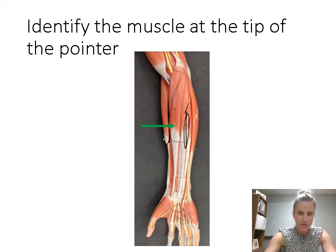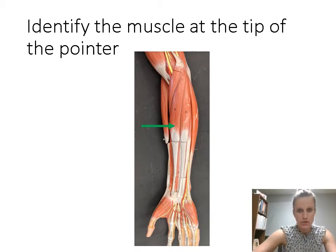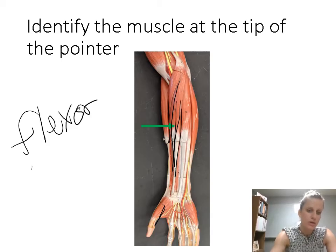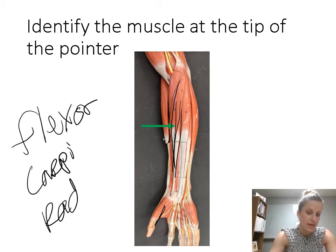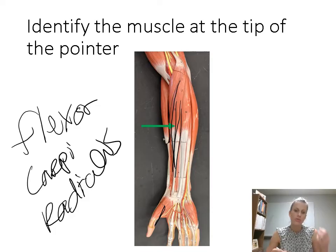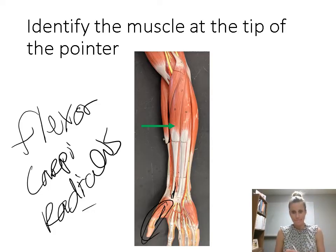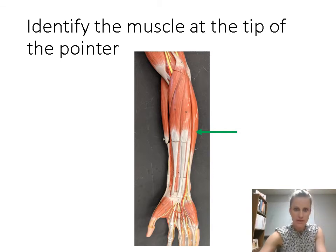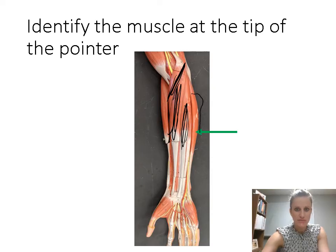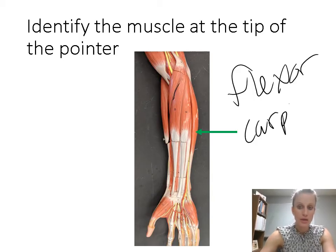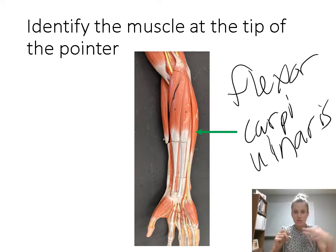The middle one was palmaris longus. Now naming the one on the side of the thumb — this is the flexor carpi radialis. It's a flexor because it's on the flexor side; carpi because it comes down to the carpal region, the wrist; radialis because it's on the same side as the thumb. Then the flexor on the pinky side is the flexor carpi ulnaris.